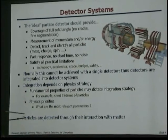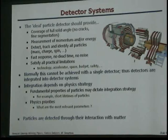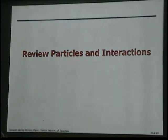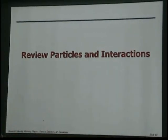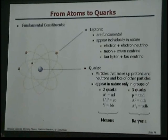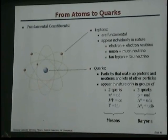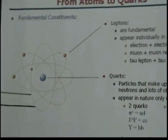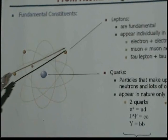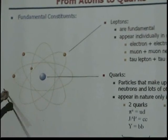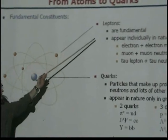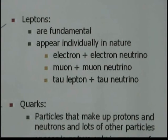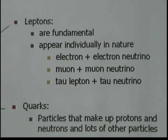Particles are detected through their interaction with matter. So how do particles interact with matter? We believe the world is built from leptons, which surround the atom and are fundamental — appearing individually in nature. There are three: an electron, a muon, and a tau lepton, each with their associated neutrinos.